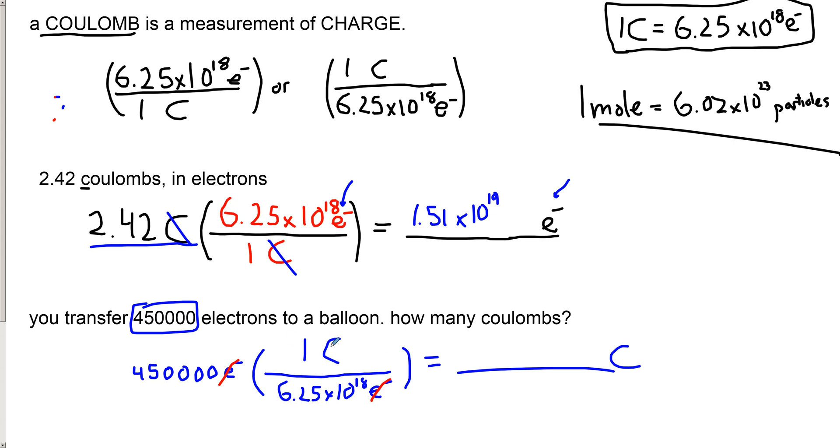This always works. As long as you understand this very simple math, you will just crush these questions. So now we just have to do the math. Since this is on the bottom, we're dividing. So I'm going to go 450,000 divided by 6.25 times 10 to the 18.